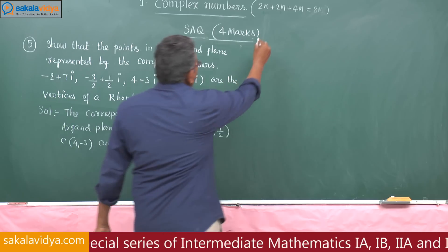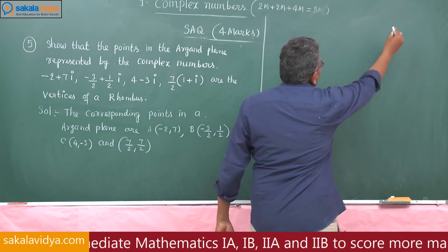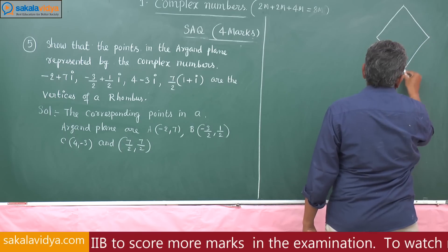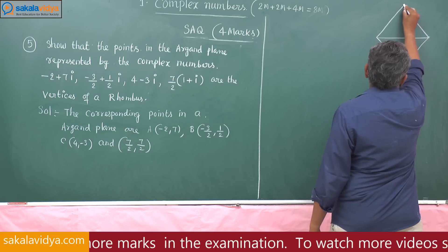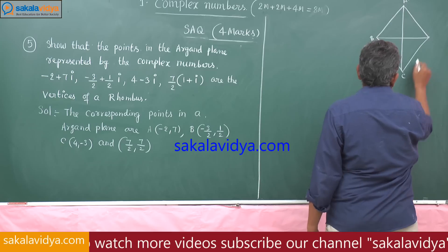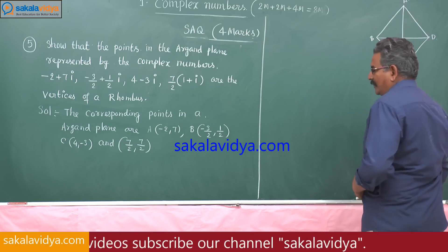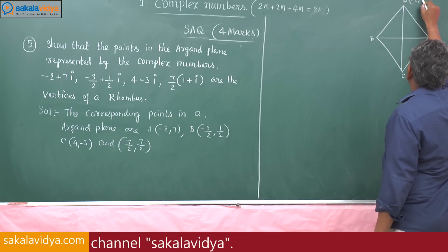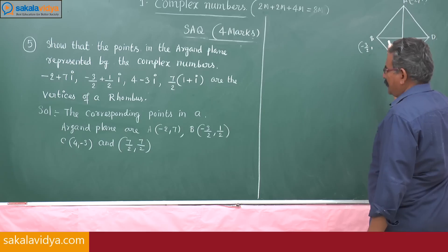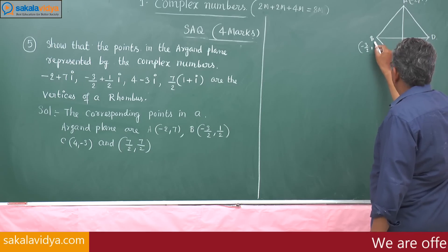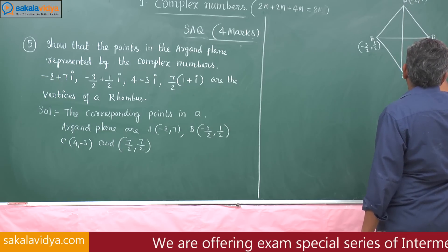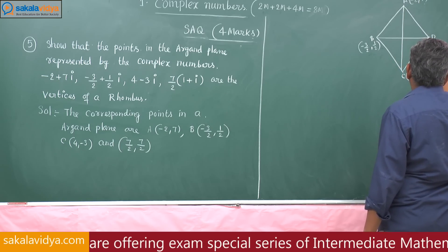Consider the rhombus figure with vertices A = (minus 2, 7), B = (minus 3 by 2, 1 by 2), C = (4, minus 3), and D = (7 by 2, 7 by 2).